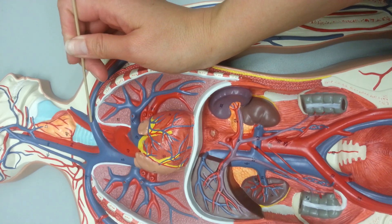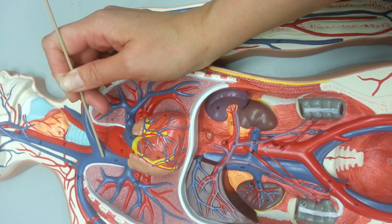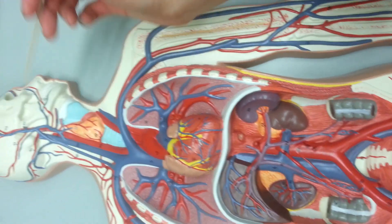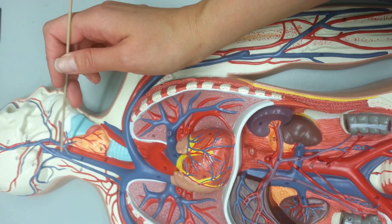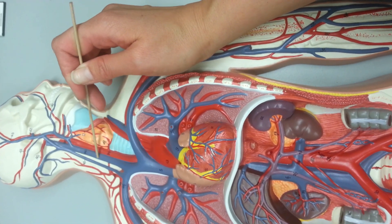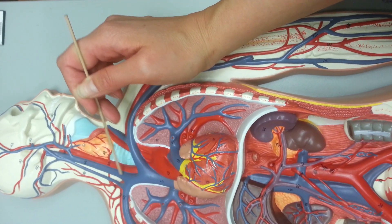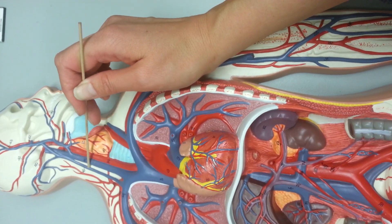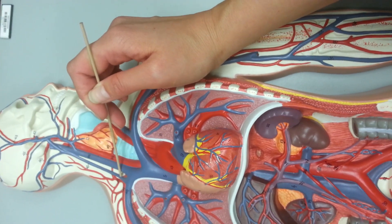Right here we have the brachiocephalic veins, which is the small v, and then from the head we have the jugular vein. Here we have the internal jugular, which is more medial and larger, and then the external jugular vein, which is more lateral and thinner.